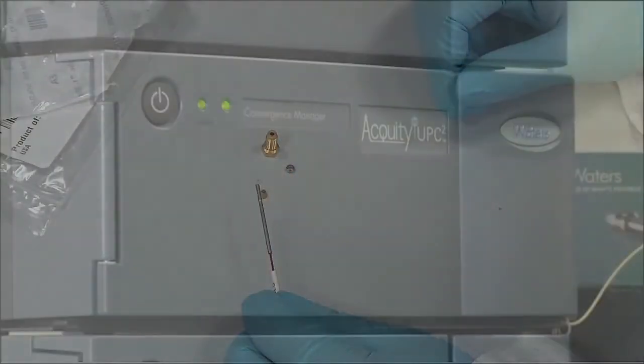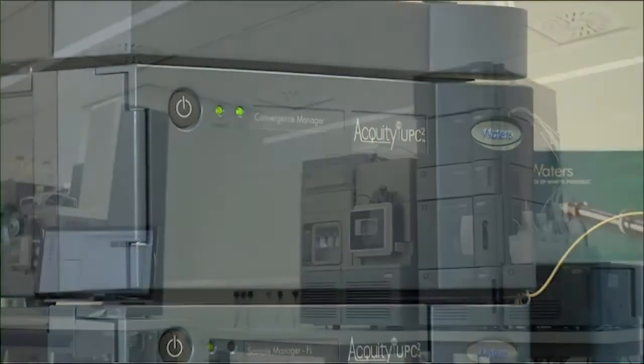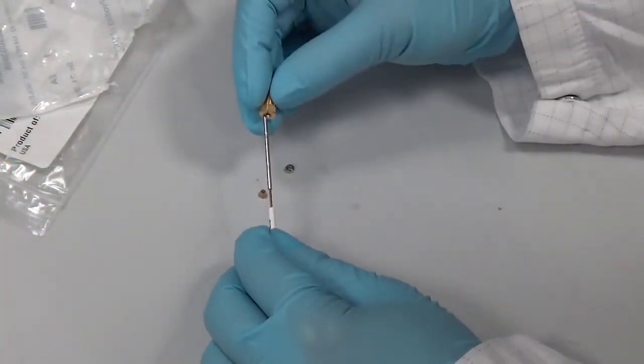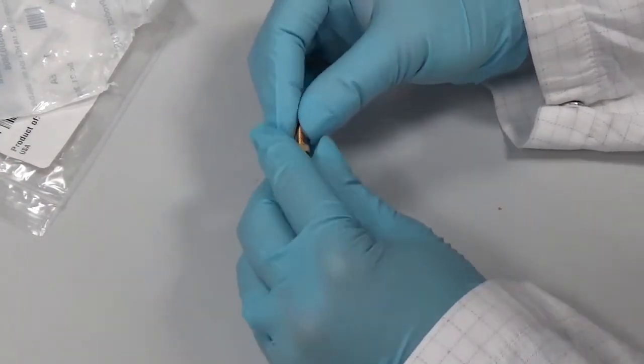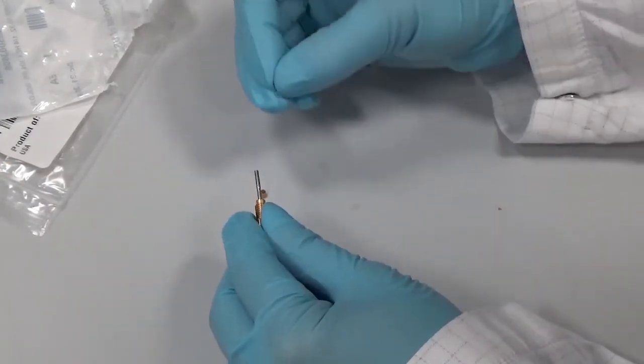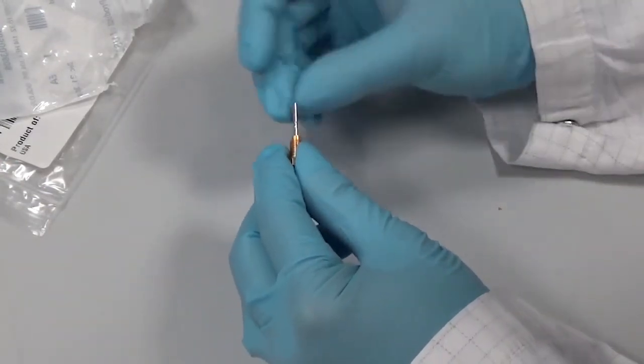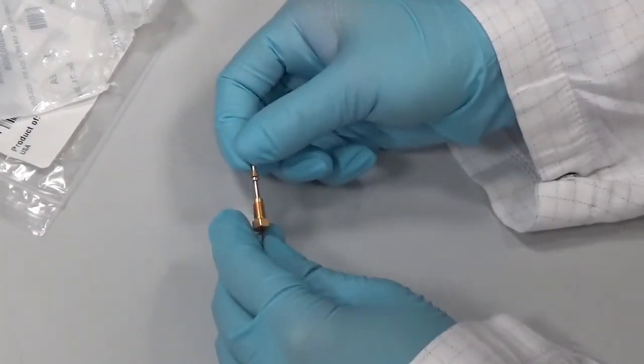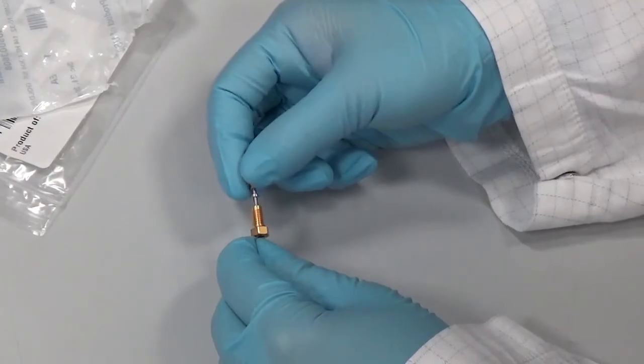To connect the probe assembly to a UPC squared system, fit the supplied UPC squared inlet fitting to the probe assembly by sliding the compression nut onto the probe assembly, followed by the backing ring and then the ferrule. The probe assembly is now ready to connect to the system.